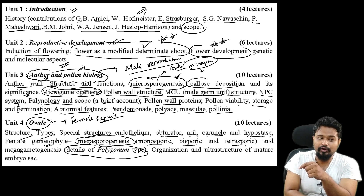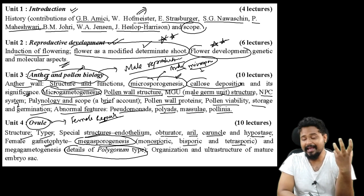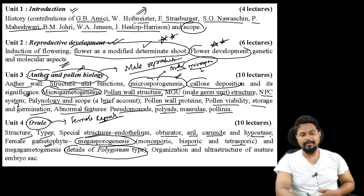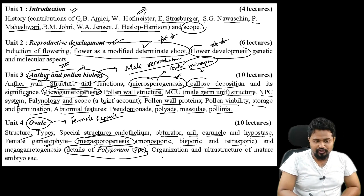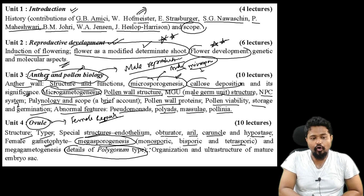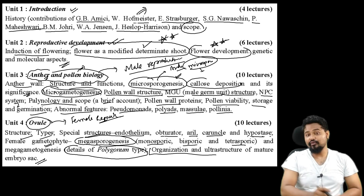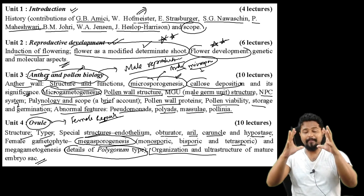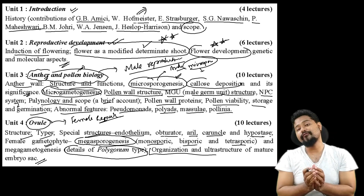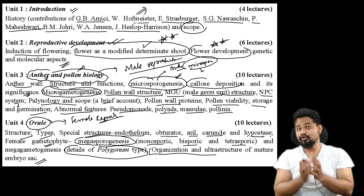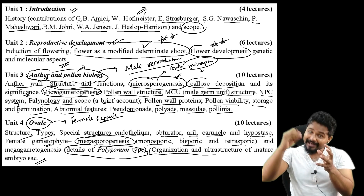The Polygonum type embryo sac development is covered in detail. Megasporogenesis, the process of organization and ultrastructure of the mature embryo sac are all included. Finally, fertilization - where the male gamete fuses with the embryo sac contents.